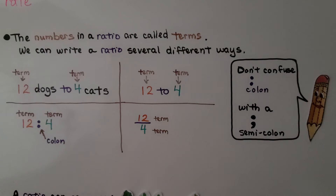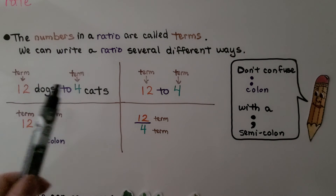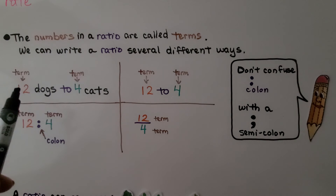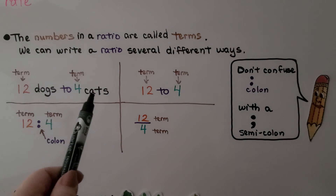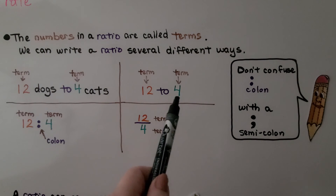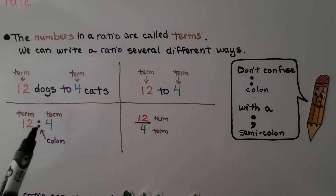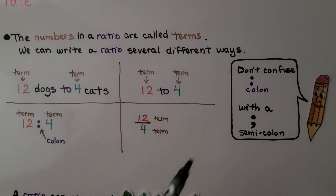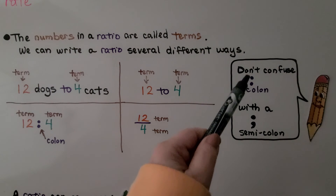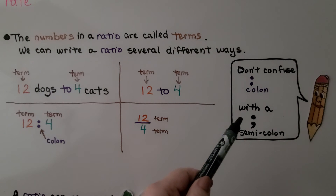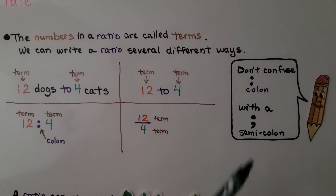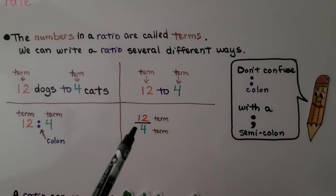The numbers in a ratio are called terms. We have 12 dogs to four cats — the 12 and four are terms. We can write a ratio several different ways: we can write '12 dogs to four cats,' we can write '12 to 4,' we can write '12:4' — the colon is read as 'to.' Don't confuse the colon with a semicolon. We can also write it as a fraction: 12 over 4.